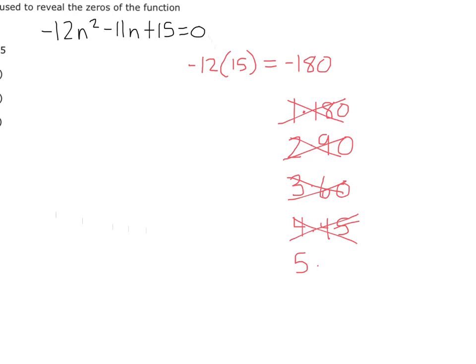5 times 36. That won't give me negative 11 either. 6 times 30. We're getting closer, right? 30 minus 6 is 24, isn't it? But I need it to be 11, don't I? So what about 7? Does it go in? No. What about 8? No. What about 9? 9 times 20. There we go, because now I can do negative 20 plus 9, don't I?